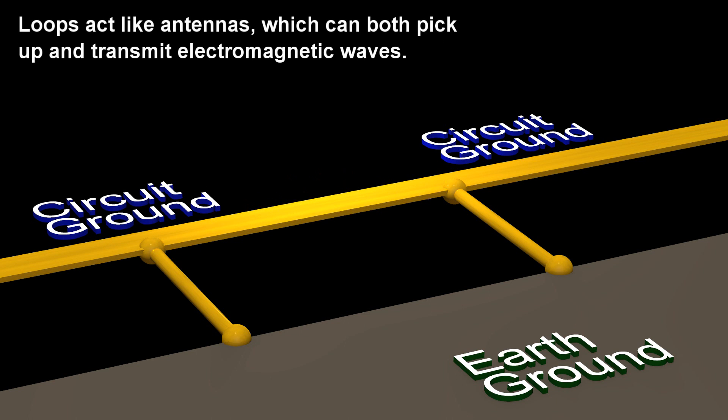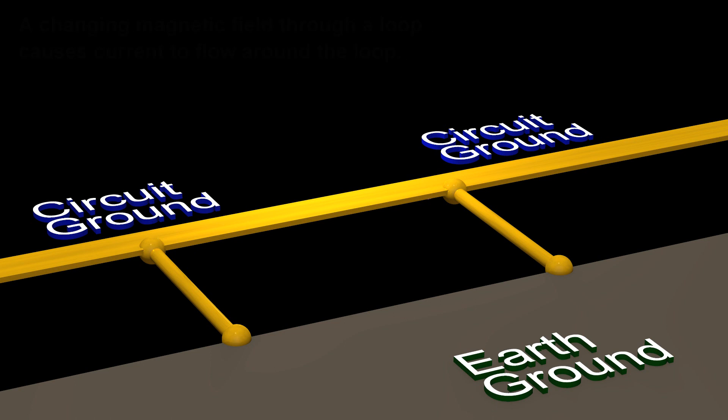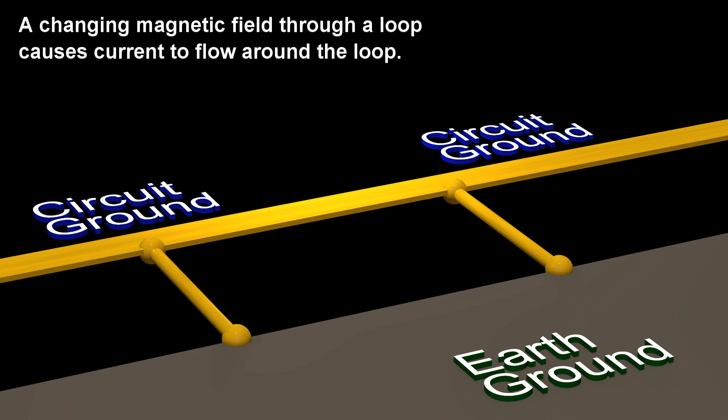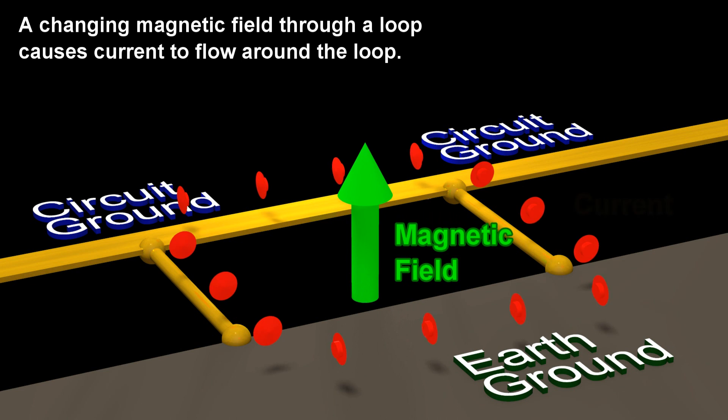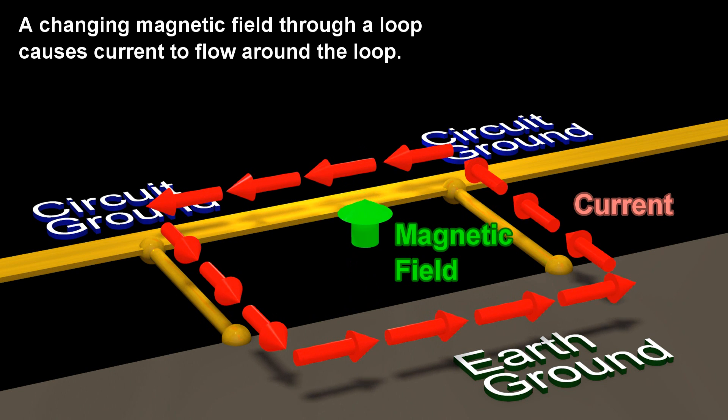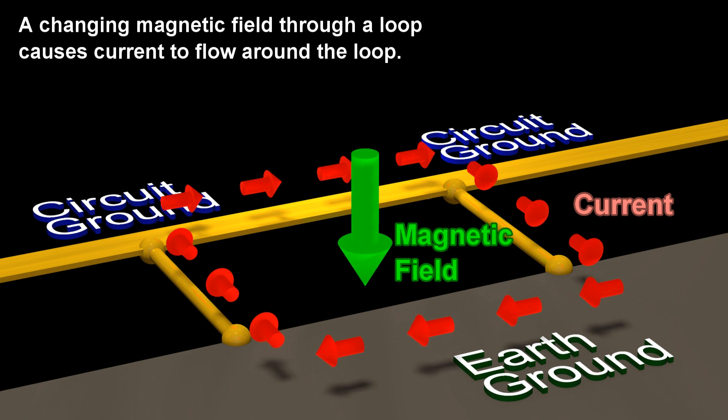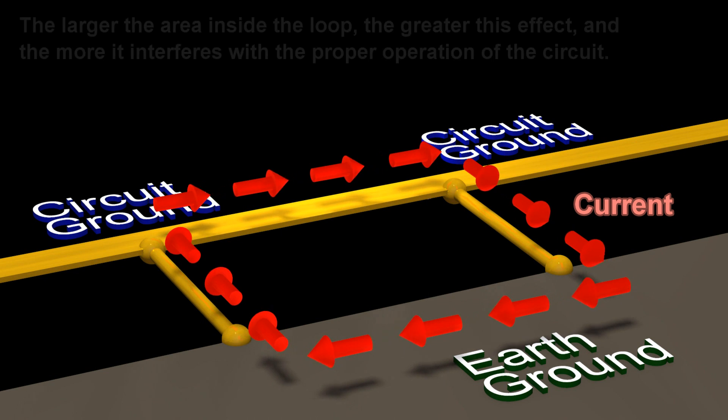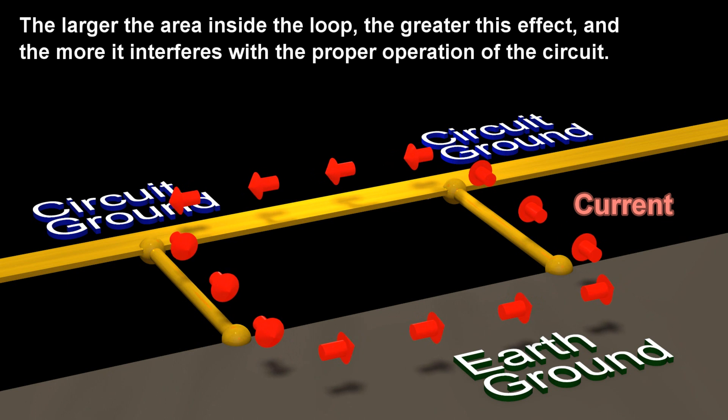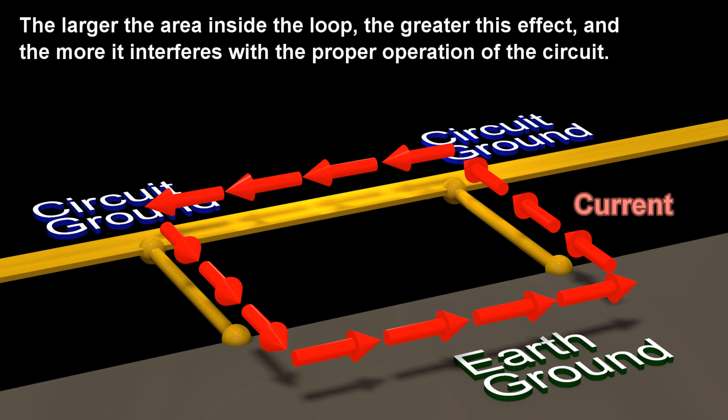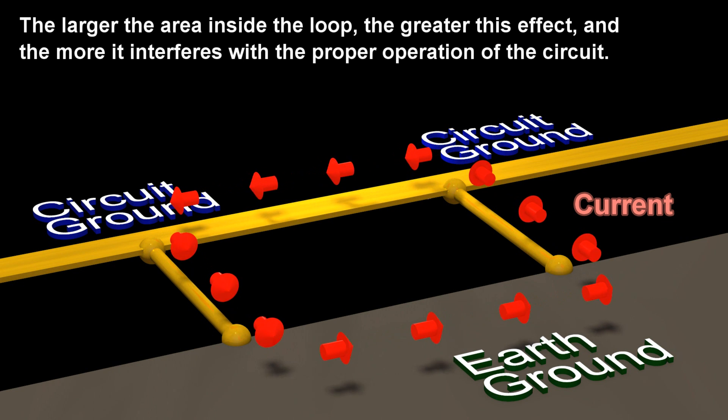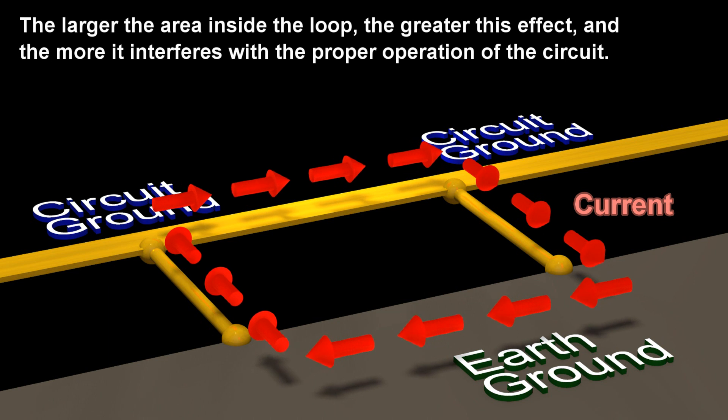Loops act like antennas, which can both pick up and transmit electromagnetic waves. A changing magnetic field through a loop causes current to flow around the loop. The larger the area inside the loop, the greater this effect, and the more it interferes with the proper operation of the circuit.